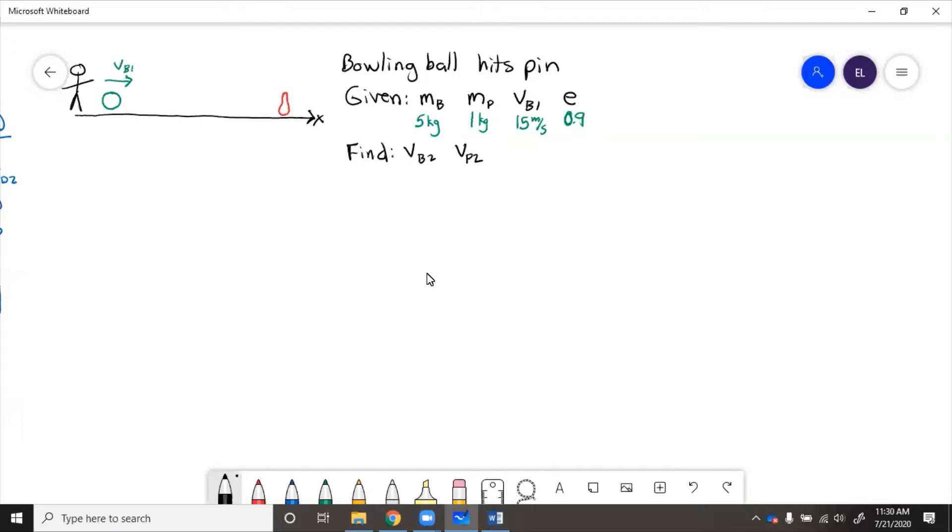Now, the pin is static, so we know that its initial velocity is just going to be zero. VP1 equals zero. We have the diagram, and we have positive x direction.